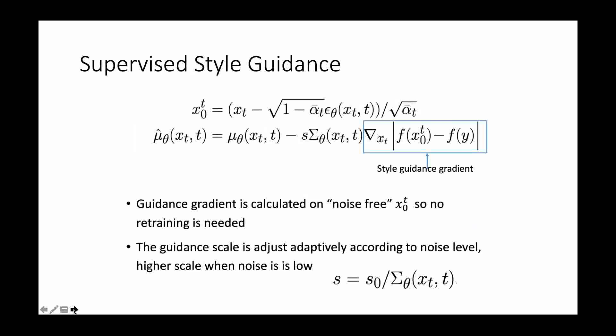We first propose a supervised style guidance where the style reference is known, which is y, and then we use the style feature f to compare y with a noise-free x0t, which is different from the noise xt, so retraining of the model is not needed. Additionally, we have modified the constant guidance scale to an adaptive one according to noise level.